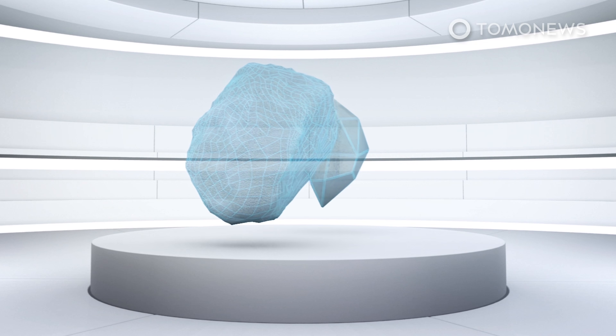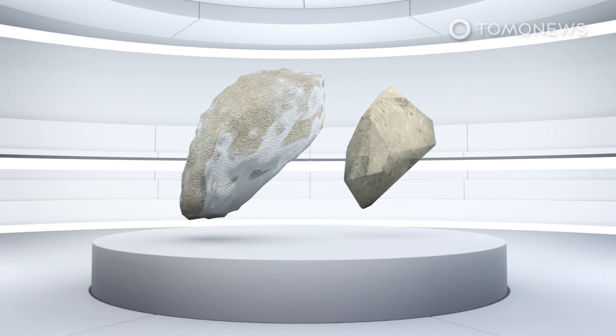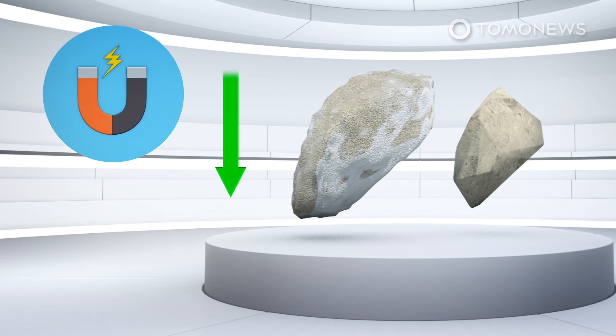To research the moon's later magnetic history, the scientists tested two samples that were one billion years old and found them to record a weak lunar magnetic field.